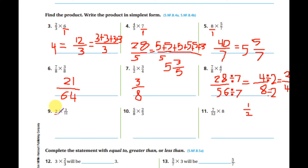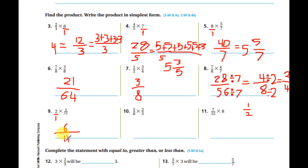Question nine: a whole number multiplied by a fraction. Imagine there is a one underneath. Multiply: two times three equals six, and one times eleven equals eleven. So the answer is six-elevenths. This is the simplest form because eleven is a prime number and six cannot be divided by eleven.